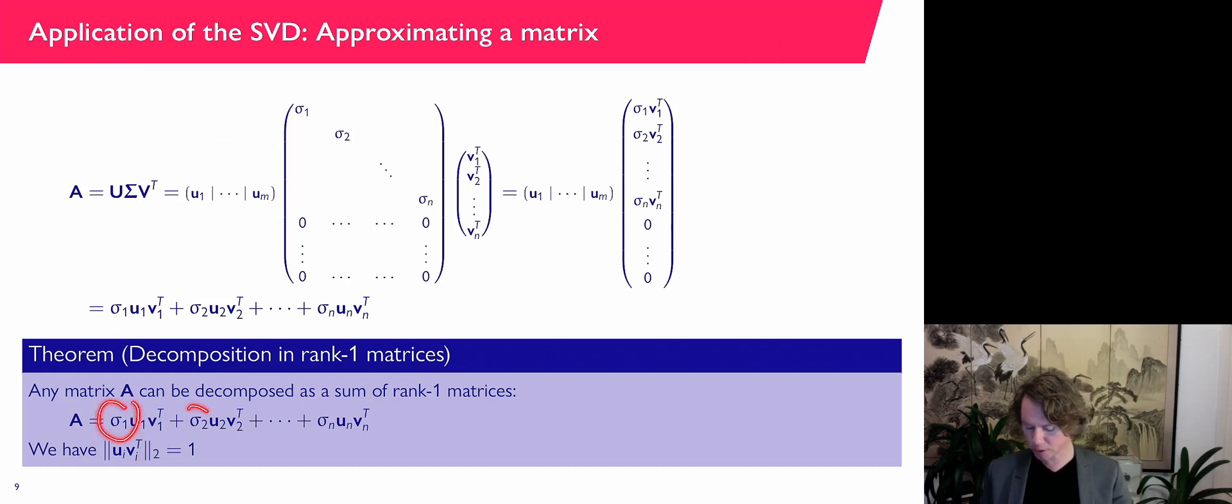And the sigmas here, so these coefficients basically of these matrices, they go down in size. So sigma 1 is the biggest one, and then sigma 2, and sigma n is the smallest one. So the information, if you like, of the matrix is somehow ranked in importance, with this one being most important and this one being least important.